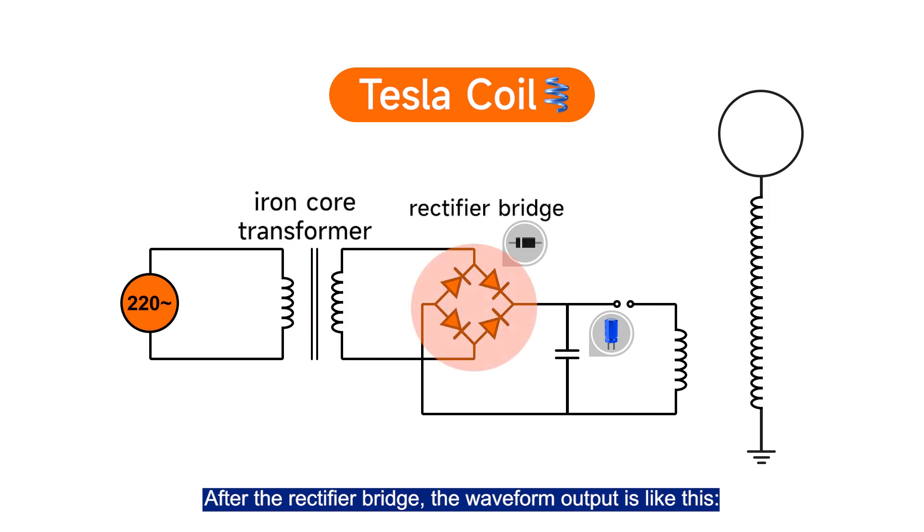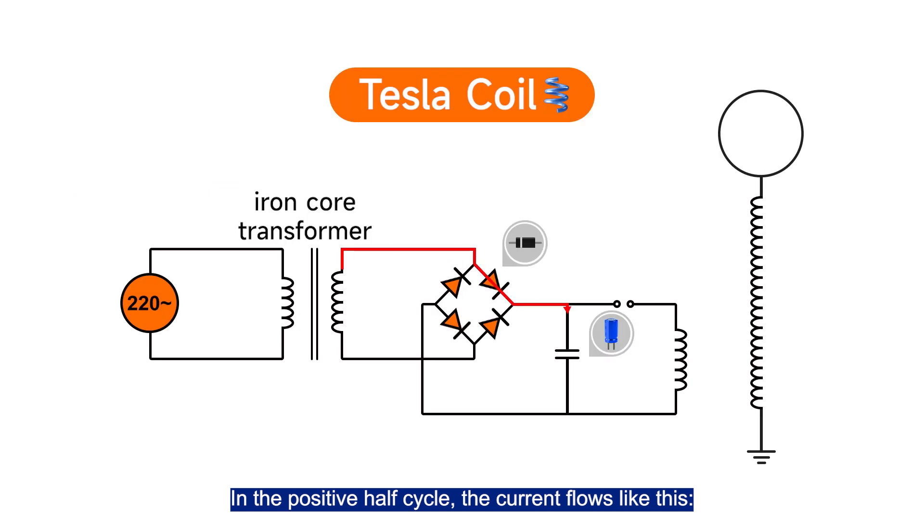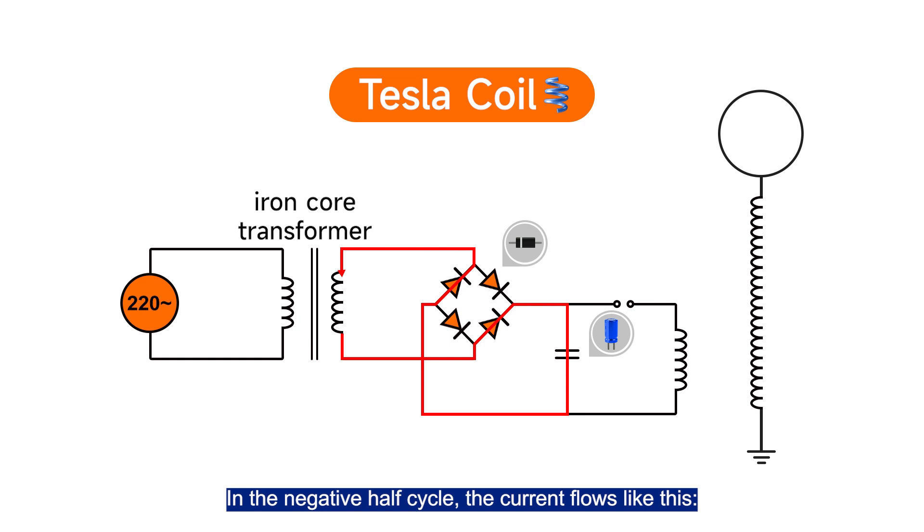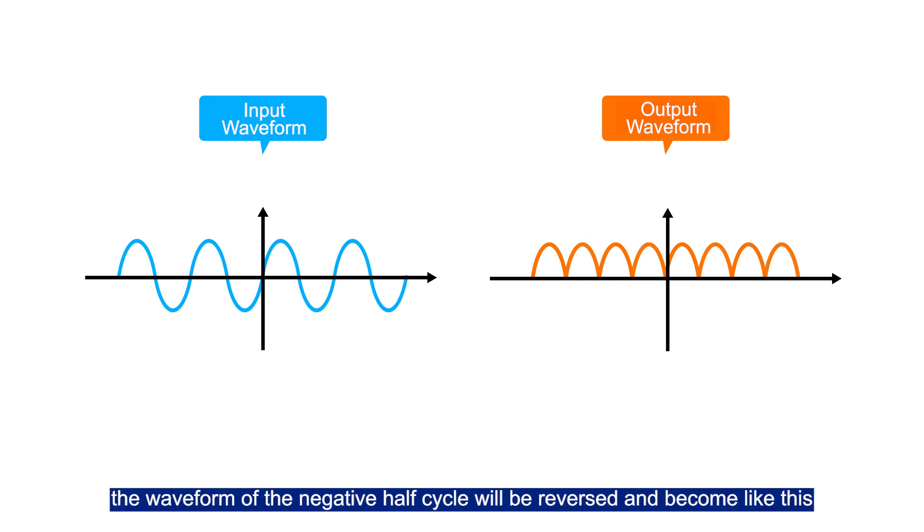After the rectifier bridge, the waveform outputs are like this. In the positive half cycle, the current flows like this. In the negative half cycle, the current flows like this. The waveform is the same as before. So after passing through the rectifier bridge, the waveform on the negative half cycle will be reversed and become like this.